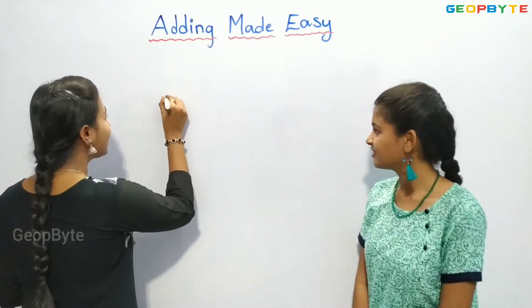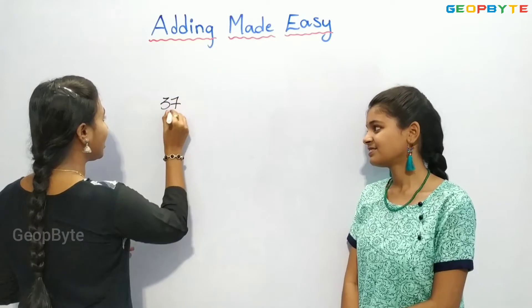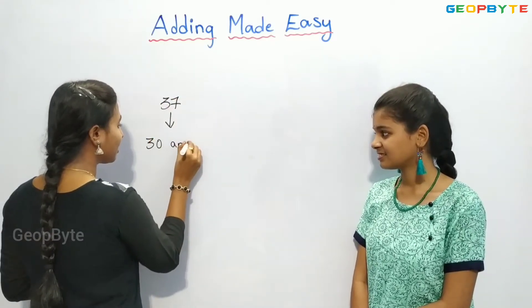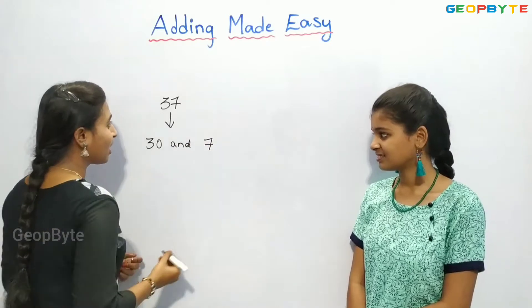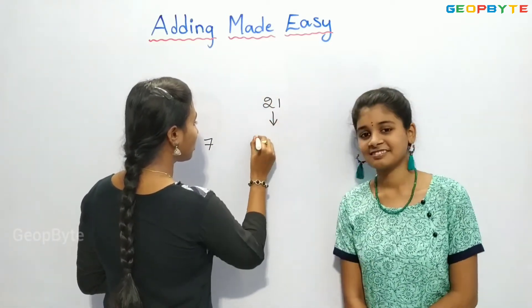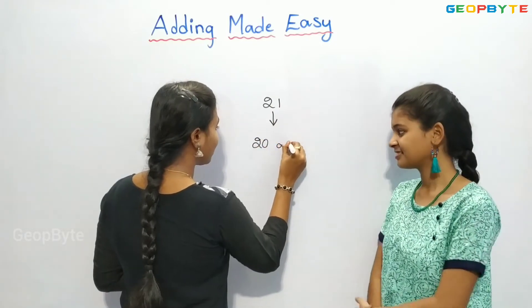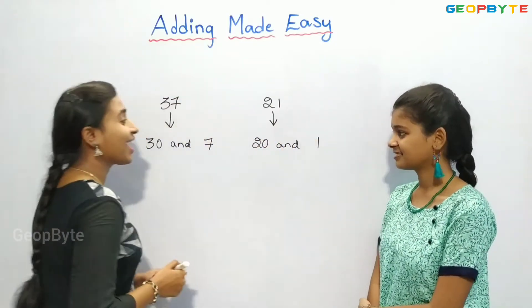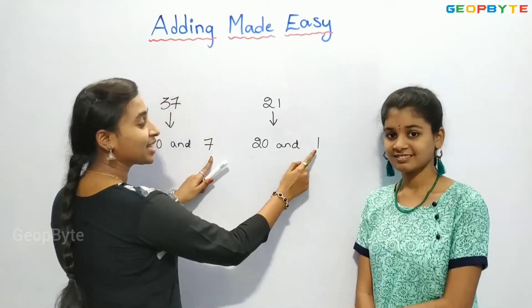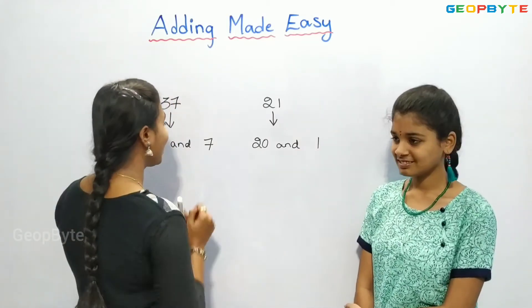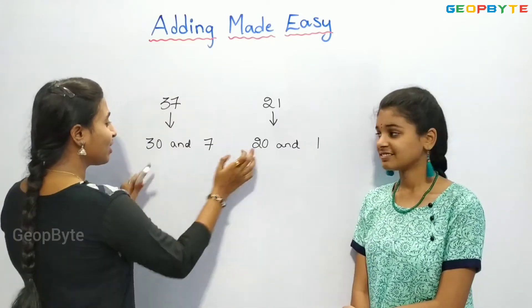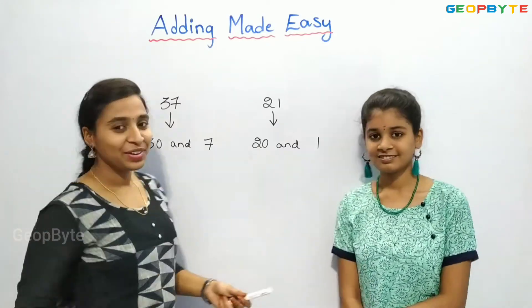I separated 37 into 30 and 7. I divided 21 into 20 and 1. I added 7 and 1 — that is 7 plus 1 is 8. And 30 plus 20 is 50. So 50 and 8 gives 58.